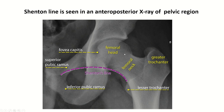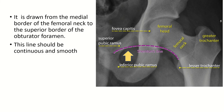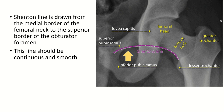Shenton's line is seen on an anteroposterior X-ray of the pelvic region. It is drawn from the medial border of the femoral neck to the superior border of the obturator foramen. This line should be continuous and smooth.